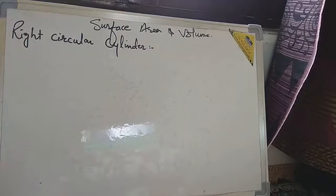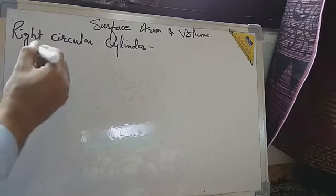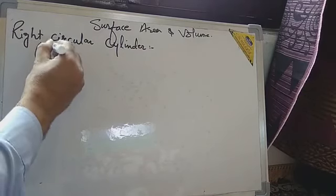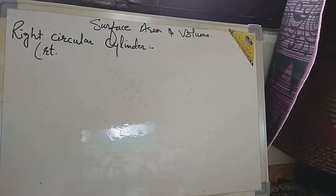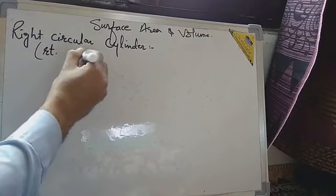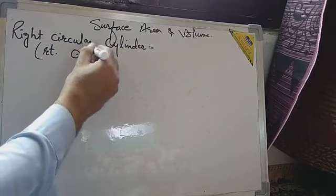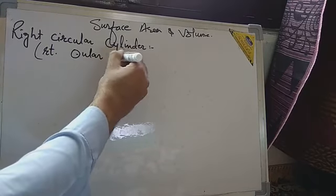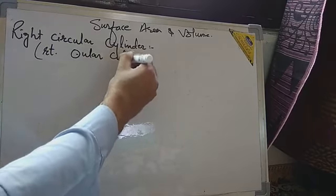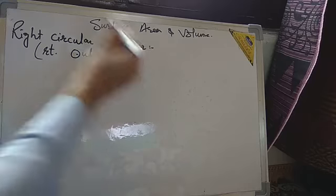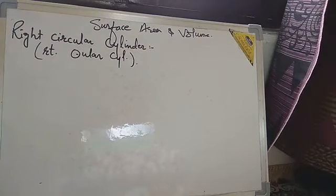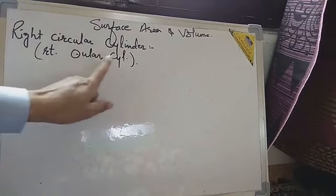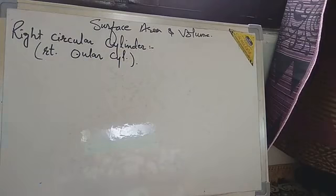A right circular cylinder can be shortly written as R.T. for right, C.I.R.C.U.L.A.R. for circular, and C.Y.L. for cylinder. This is the short formation of writing right circular cylinder.